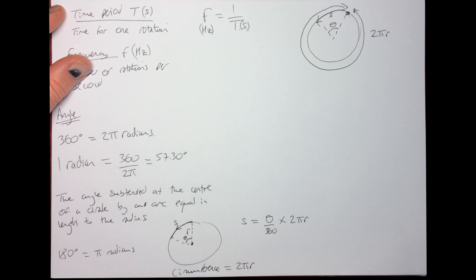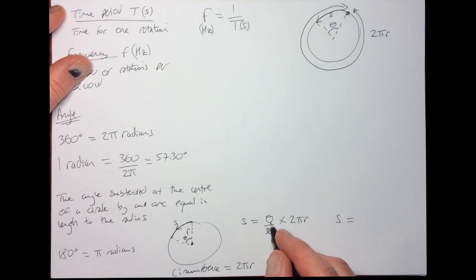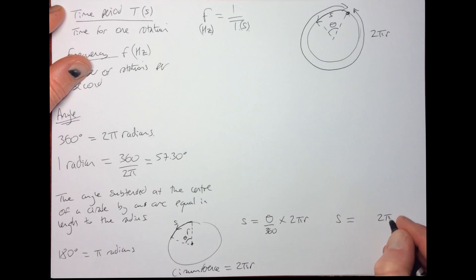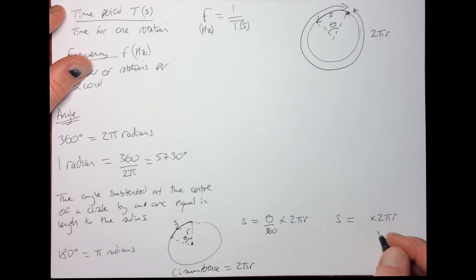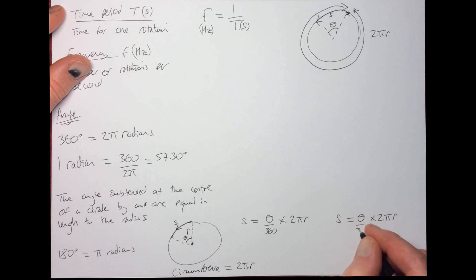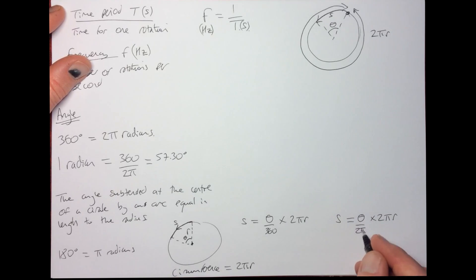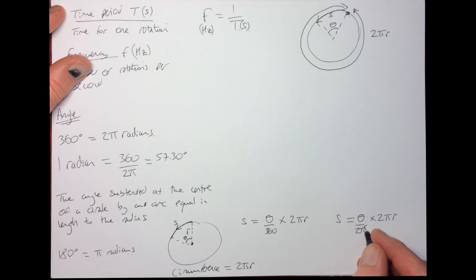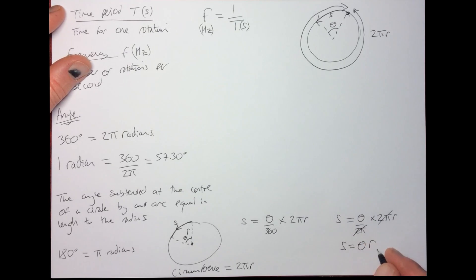If we use the angle in radians instead, the fraction of the total angle passed through becomes θ over 2π rather than over 360 degrees, and the circumference is 2πr. You'll notice the 2π cancels out, and the equation simplifies to s = θr. That's the arc length formula in radians.